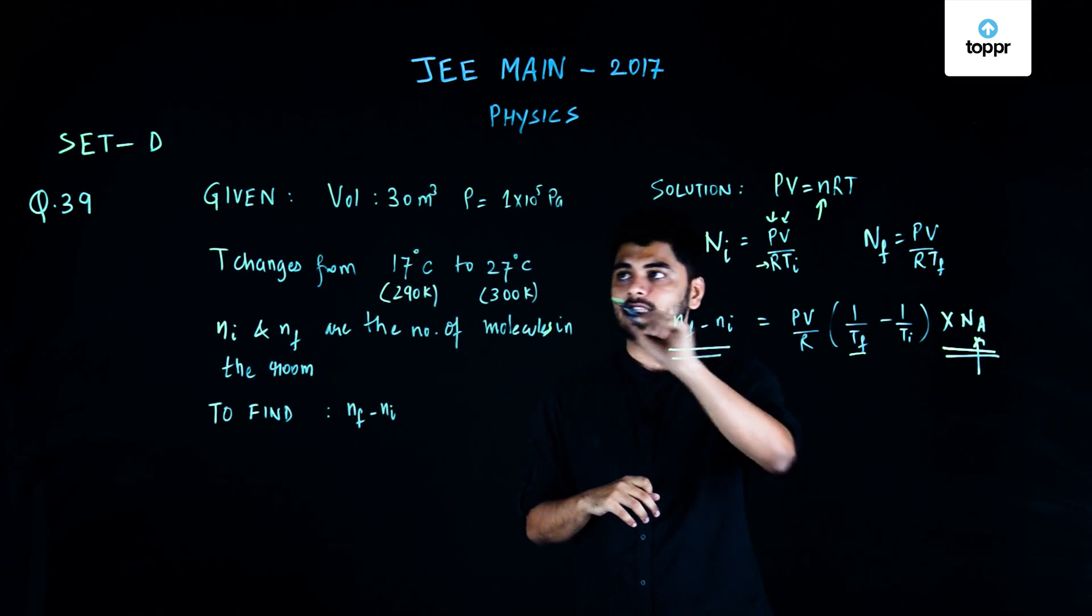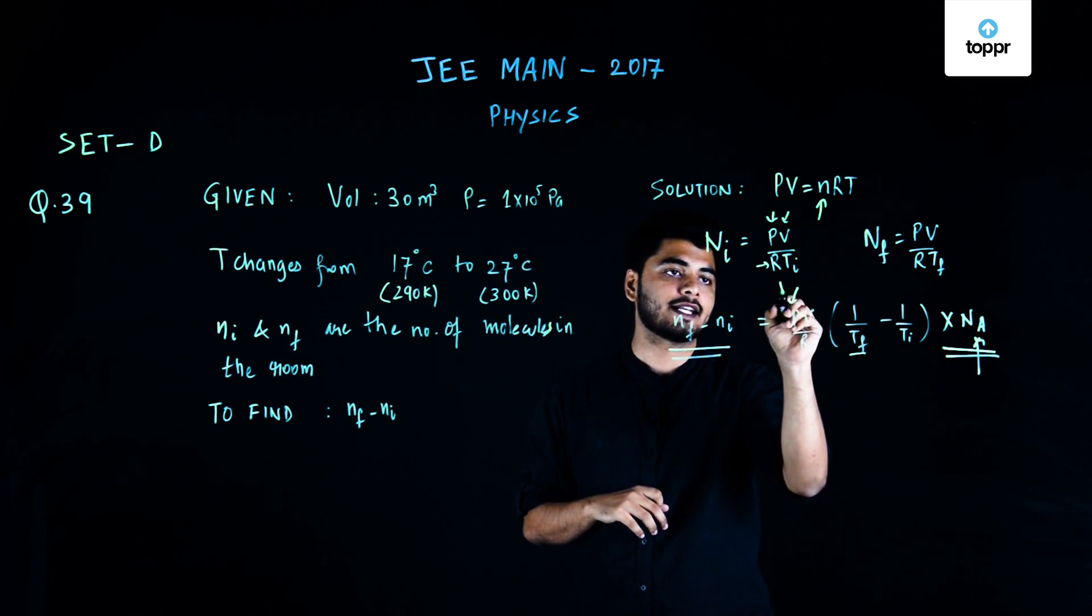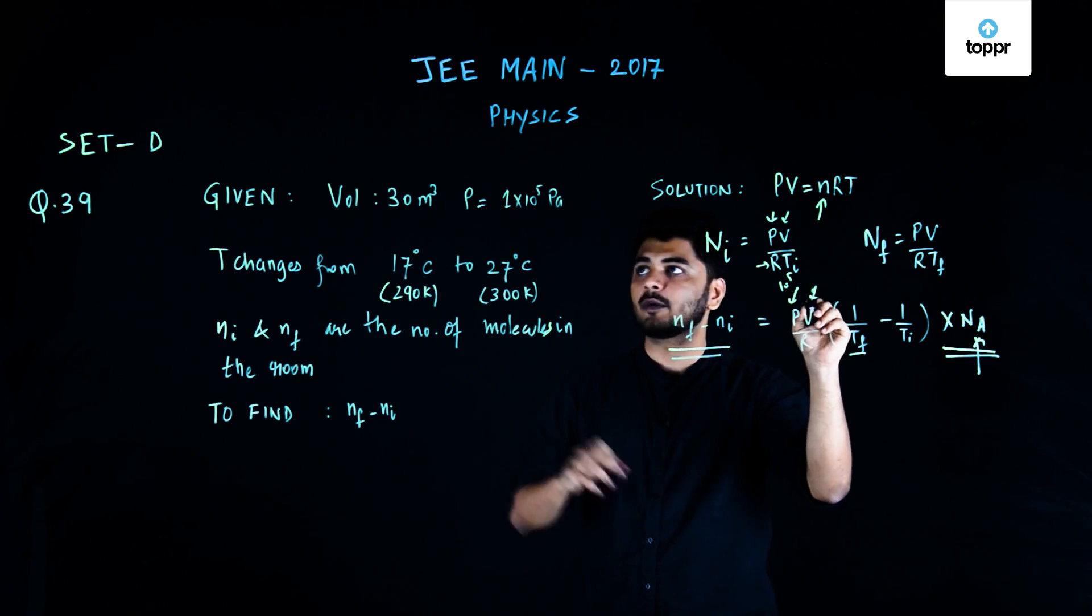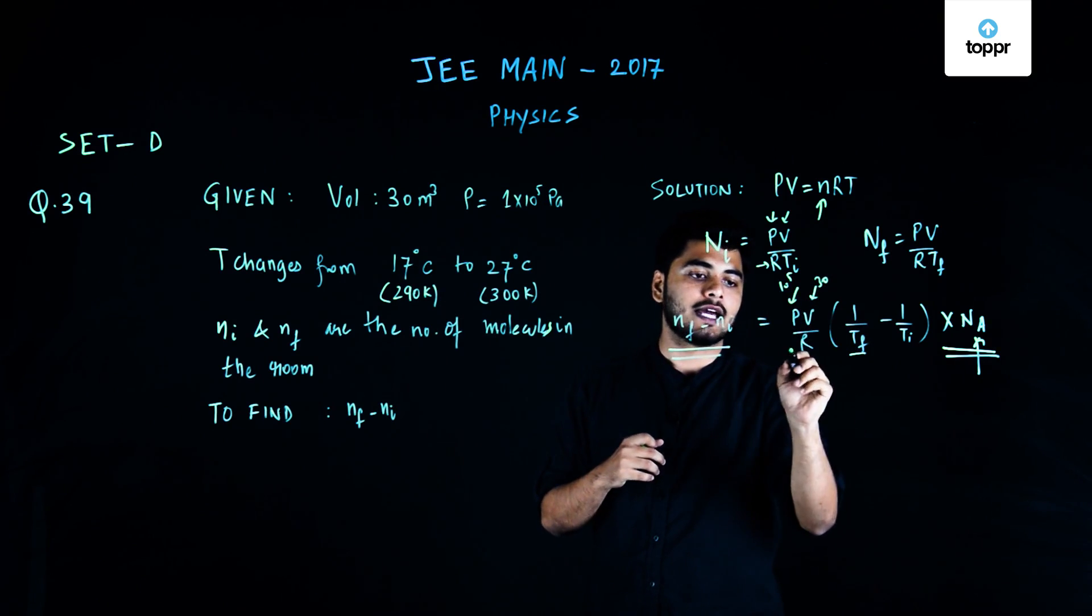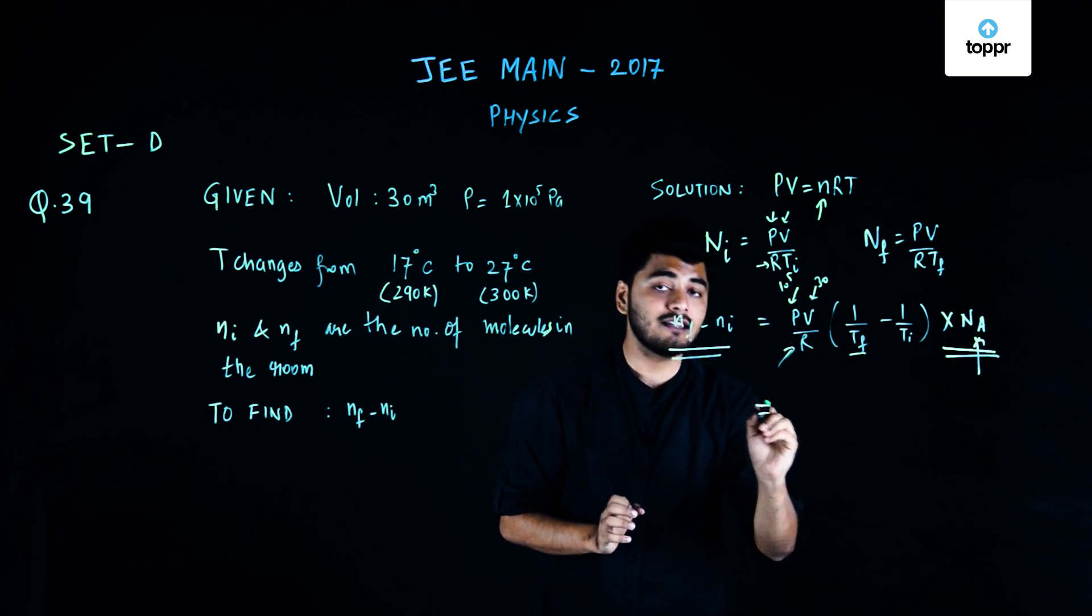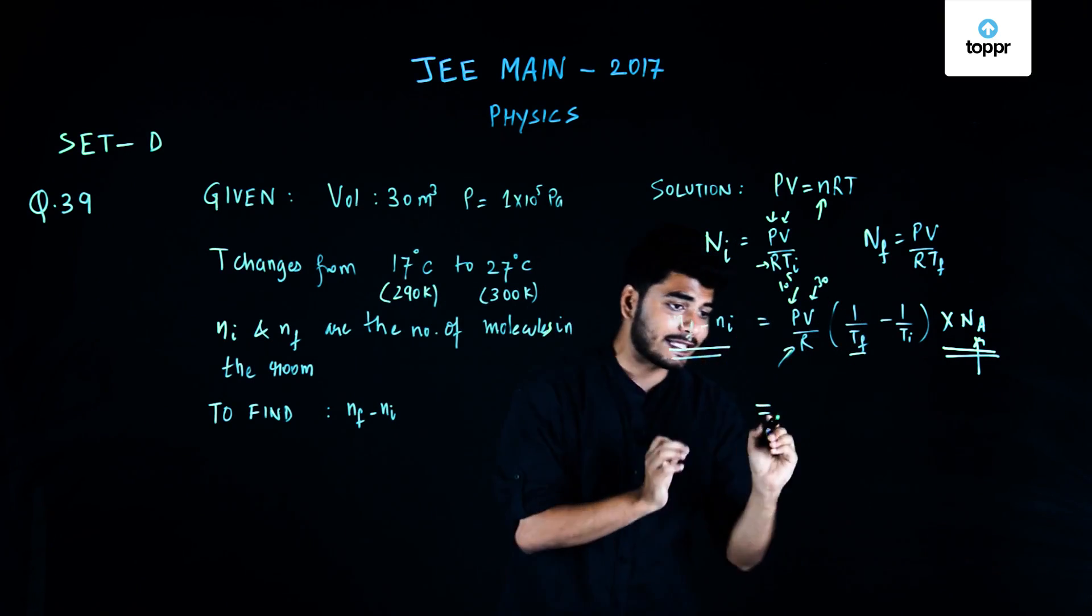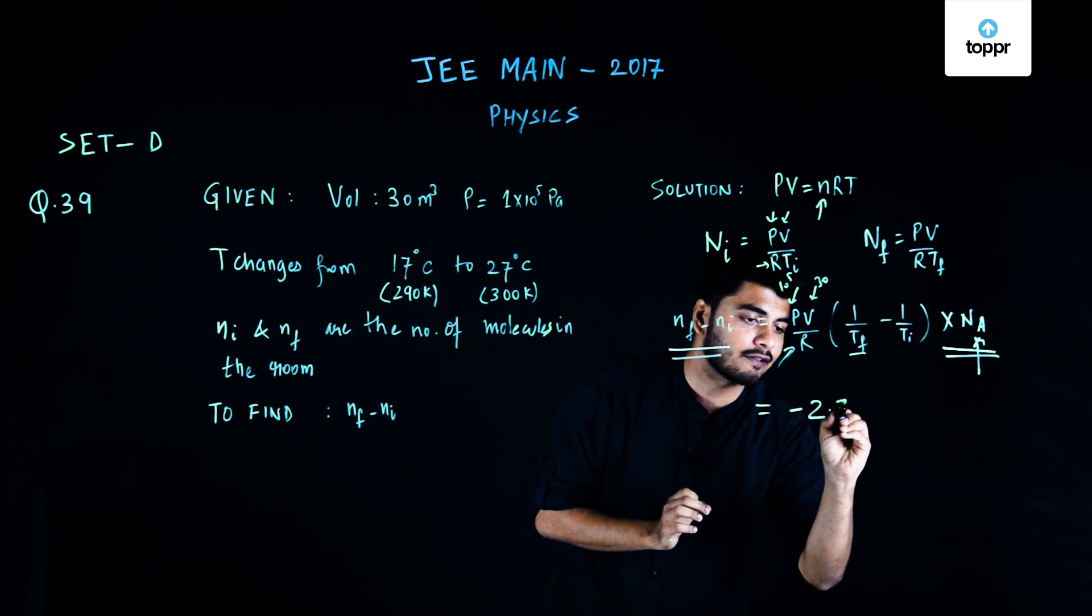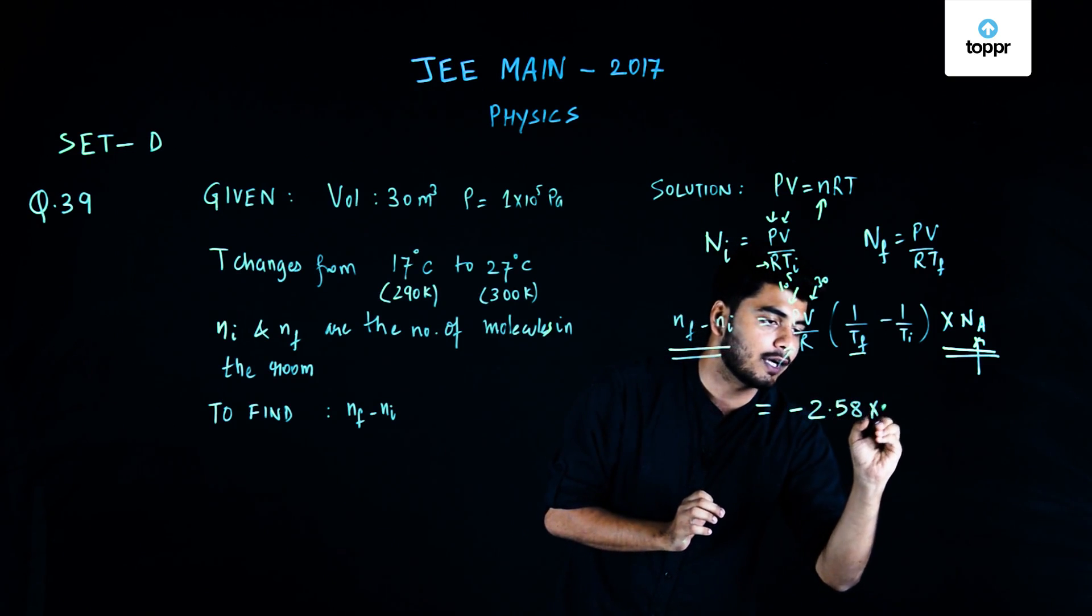On substituting these terms, that is pressure will be equal to 10 to power 5 Pascals, volume would be equal to 30 meter cube and R the value of which we know. On substituting all these values, my final value in the difference of number of molecules comes out to be minus 2.58 into 10 raised to power 25.